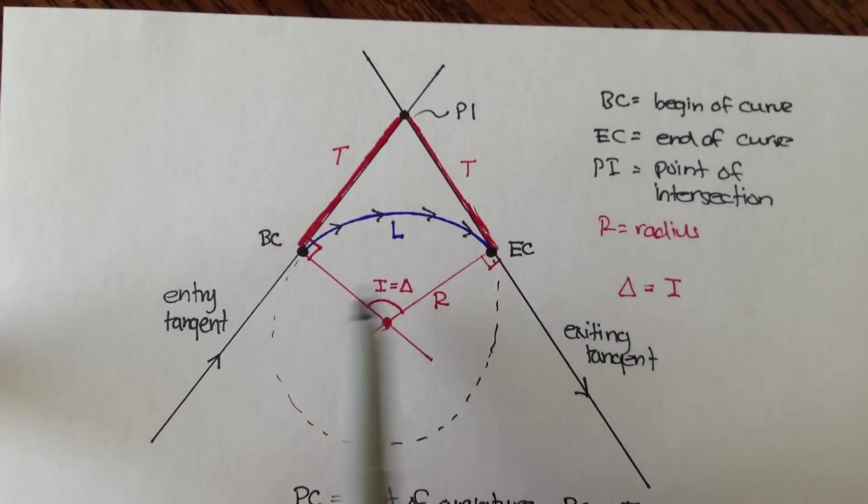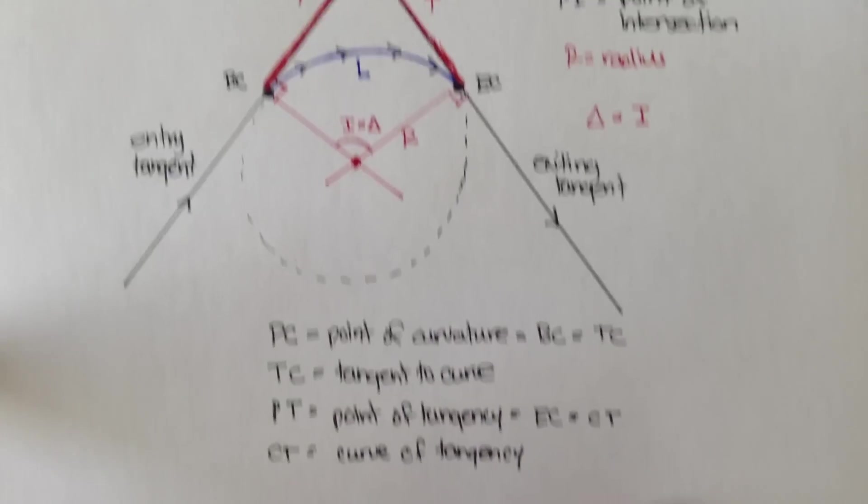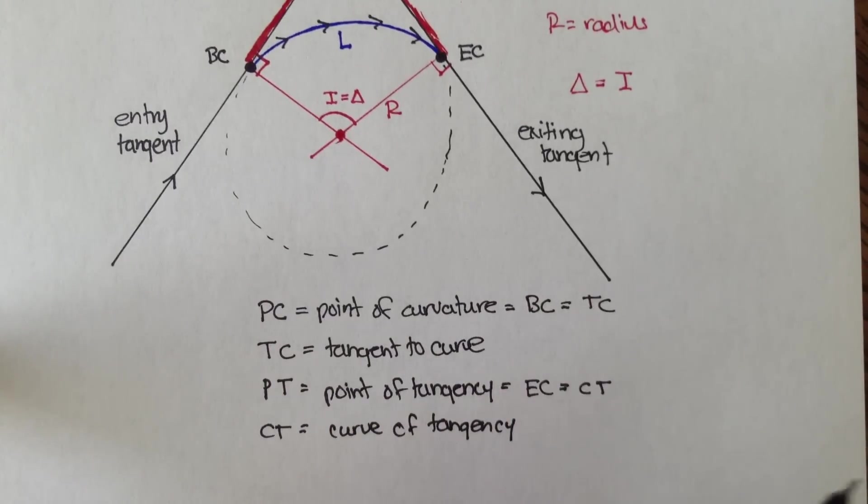I like to be simple and just use BC, EC, and PI. Some problems may have these other ways of stating all these different points, so now you kind of know what these stand for.